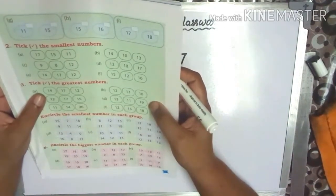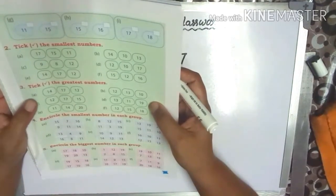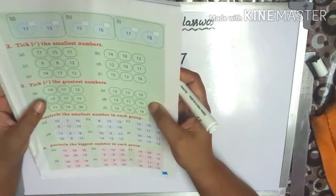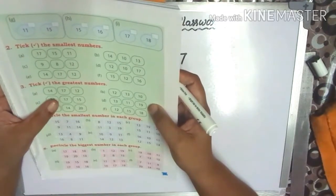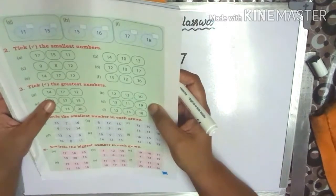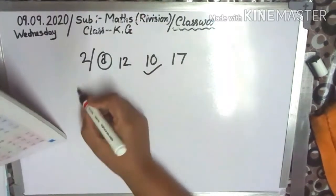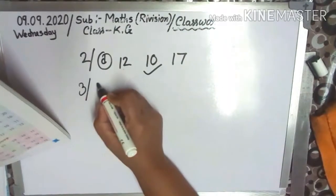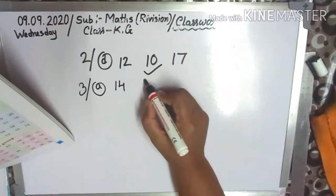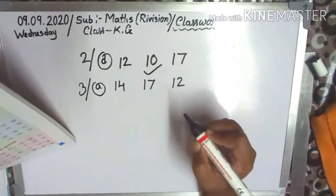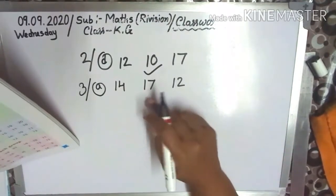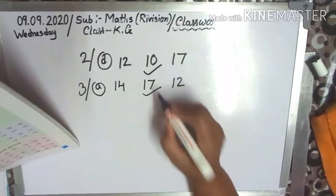Write the greatest numbers. A: 14, 17, 12. See the numbers: 14, 17, 12. So 17 is the greatest number — tick it. Number 3, A: 14, 17, 12 — who is the greatest? 17 is the greatest number.